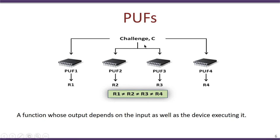For example, if the same PUF function is implemented in four different devices and you give the same input to all four, you would expect four different responses. This means that given a particular challenge, you can use the response to identify which device executed that function. This is very different from standard functions like sine or cosine, where the output is the same regardless of which device computes it. With a PUF, the outputs differ based on which device is executing the function, and this feature is what is used to authenticate a device.